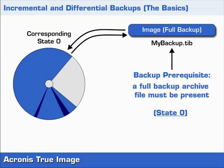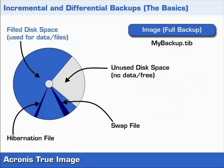We will use once again the example of backing up an operating system partition. To simplify matters we will call the current data status of the example in the diagram state 0. This partition has typical data distributions of used and free sectors as well as areas reserved for swap and hibernation files. These concepts and the imagery used should be familiar from previous videos.